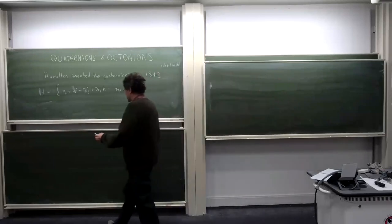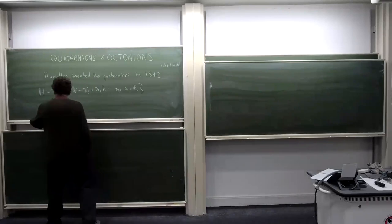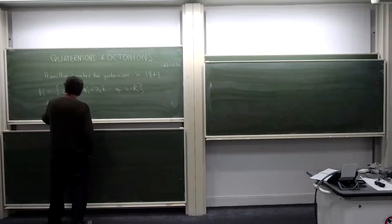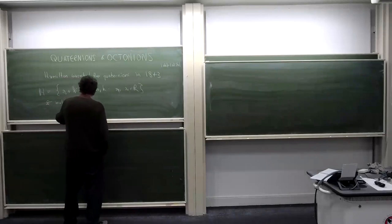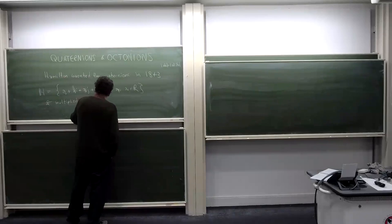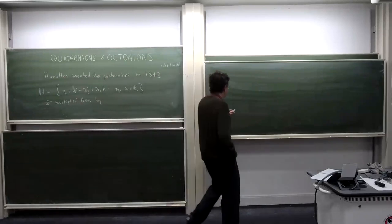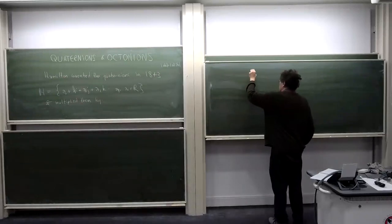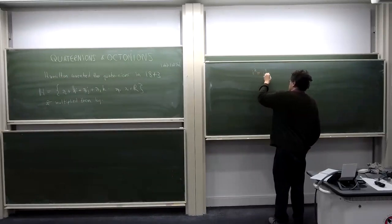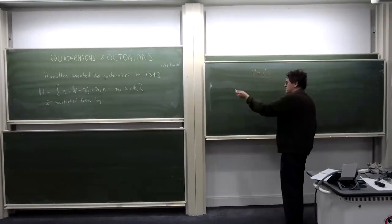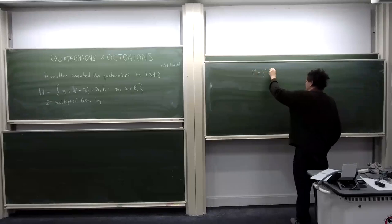So a quaternion is written as a₀ + a₁i + a₂j + a₃k, where a₀ through a₃ are real numbers. The key is figuring out how to multiply them — specifically how to multiply i, j, and k. One acts as the multiplicative unit.